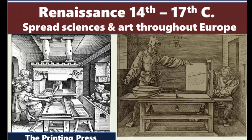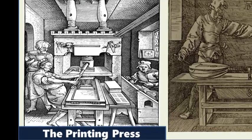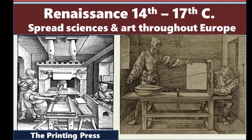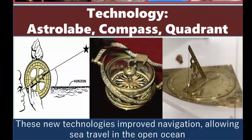Traders began expanding their reach in search of popular goods, bringing wealth to what were now becoming European nation-states. Around the 14th century, a period known as the Renaissance took hold of Europe as advances in the sciences and arts spread knowledge throughout the region. One development, the creation of the printing press, helped extend information about shipping and trade as people began to learn about worlds outside of their little corners of the globe. Technological advances such as the Astrolabe, the Compass, and Quadrant helped improve navigation, allowing for sea travel in the open ocean away from the sight of land.